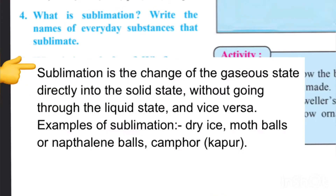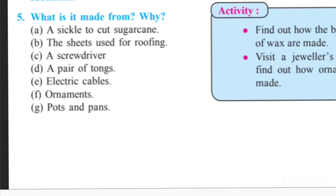Question number four: What is sublimation? Write the names of everyday substances that sublimate. Answer: Sublimation is the change of the gaseous state directly into the solid state without going through the liquid state, and vice versa. Examples of sublimation: dry ice, moth balls or naphthalene balls, camphor (Kapoor), etc.